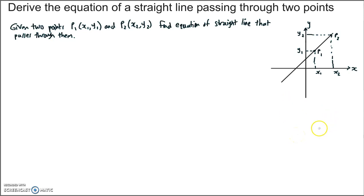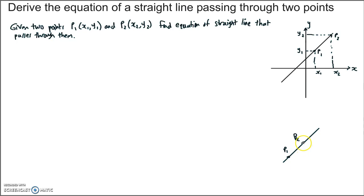Let's draw a straight line. An important property of a straight line is that the slope is constant on the line. If we pick two points, say P1 and P2, and want to compute the slope, we compute the difference in the y coordinates — let's call this delta y — and divide that by the difference in the x coordinates, which we'll call delta x.